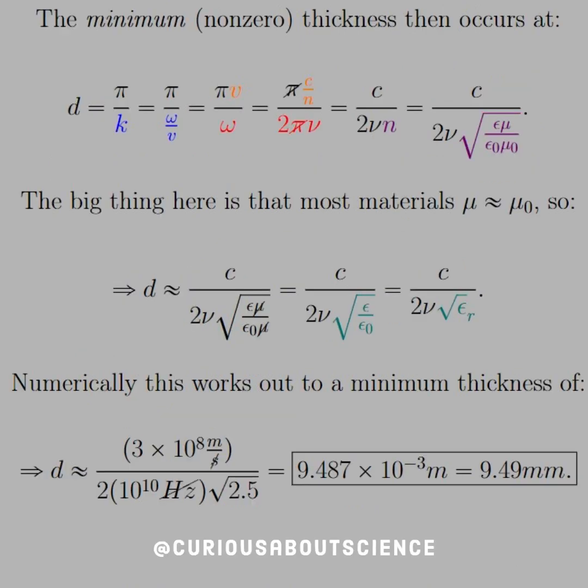Okay, so the minimum non-zero occurs at d equals pi over k. Okay, first integer there, easy to deal with.